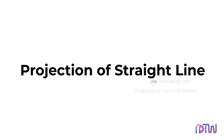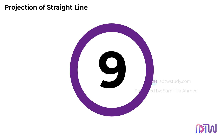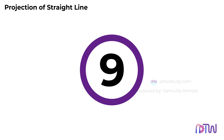Projection of Straight Line. Today, we're diving into the world of straight line projections, focusing on the first quadrant. Before we jump in, make sure to check out my previous video on point projection — it'll be the perfect foundation for what we're exploring here. Let's explore the various positions a line can take in the first quadrant. There are a total of 9 positions, and we're going to dissect each one, understanding how they manifest in 2D representation or the orthographic view.